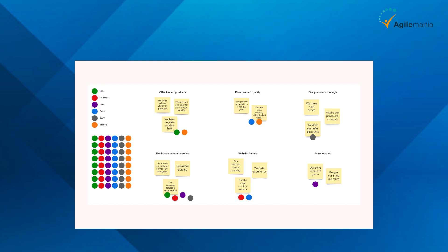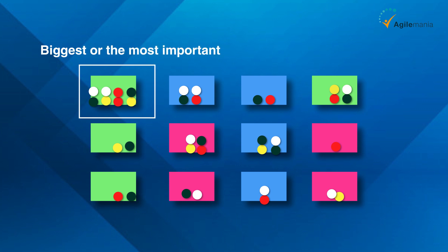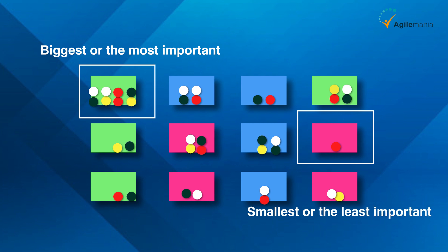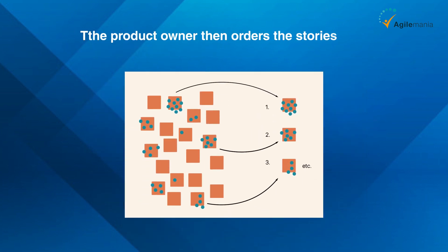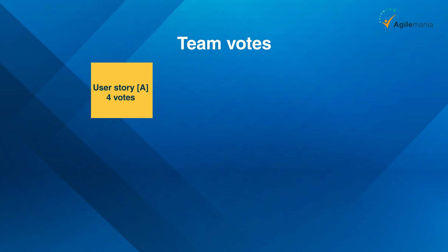At the end of this process, the story with the highest number of votes is considered the biggest or the most important, and the story with the lowest number of votes is considered the smallest or the least important. The product owner then orders the stories from highest to lowest number of votes.